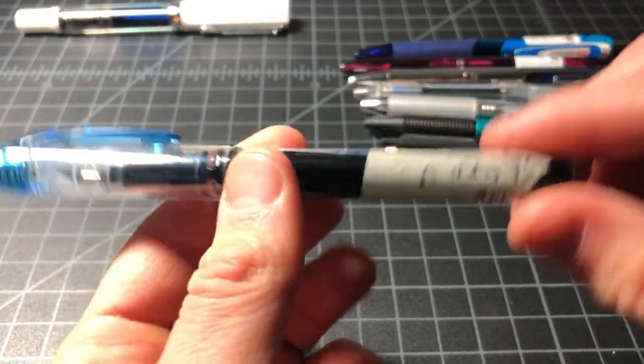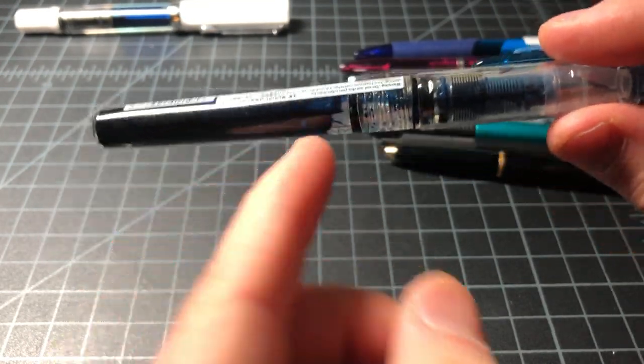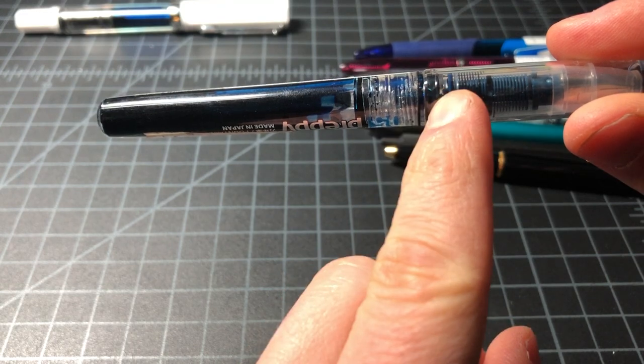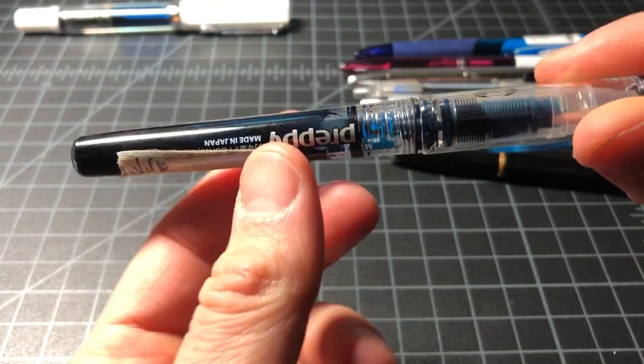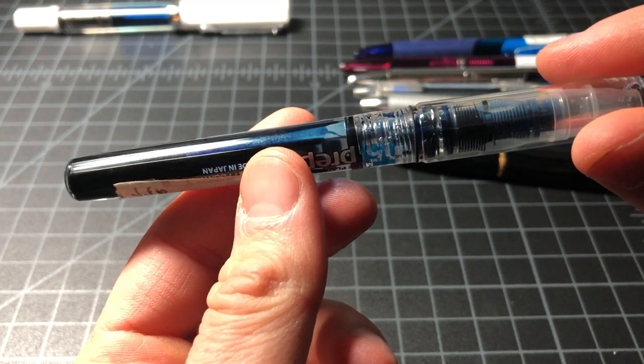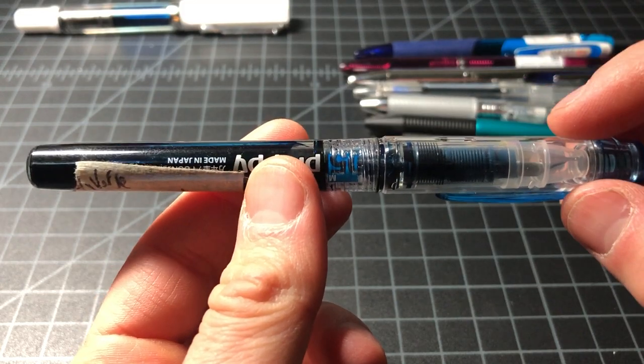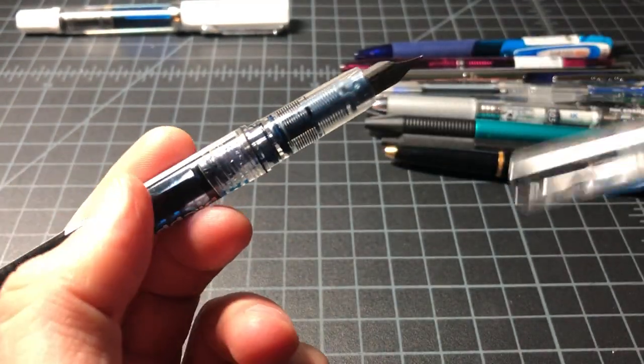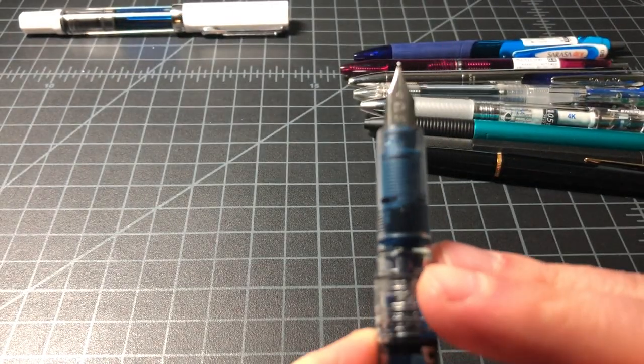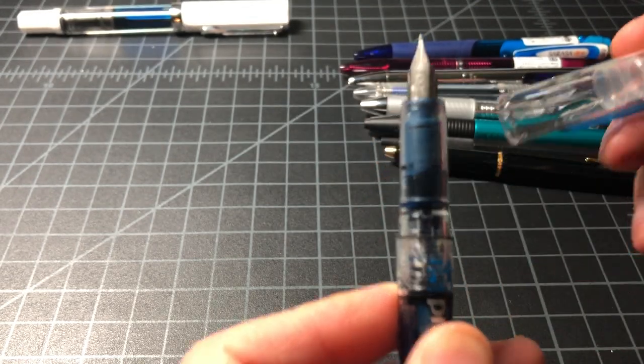Next up we have the Platinum Preppy, and you can see I have it converted to an eyedropper. That way I get a lot of ink in it. I did a lot of eyedropper conversions this year and none of them cracked. They all did really well. Actually, one of them cracked but it didn't spill any place important. I buy these in bulk in the 0.5 millimeter which is medium.